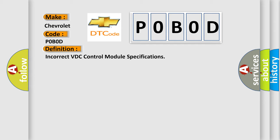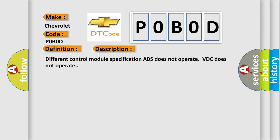And now this is a short description of this DTC code. Different control module specification: ABS does not operate, VDC does not operate.